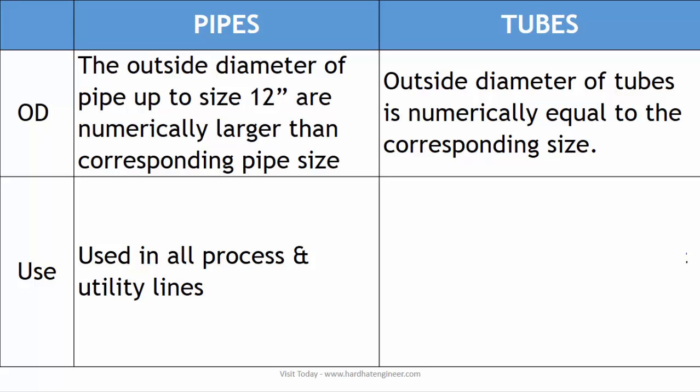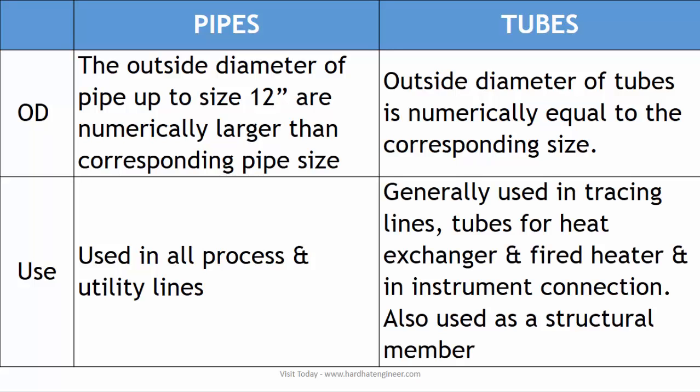Tubes are generally used for heat transfer applications such as heat tracing, heat exchangers, and fired heaters, and also used as instrument connection lines. Tubes are also used as primary load-bearing members in steel structures for civil applications.